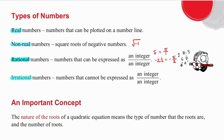An irrational number is a number that cannot be expressed as an integer over an integer — something like the square root of two or pi. It's very important that you know real and non-real numbers, and rational and irrational numbers.